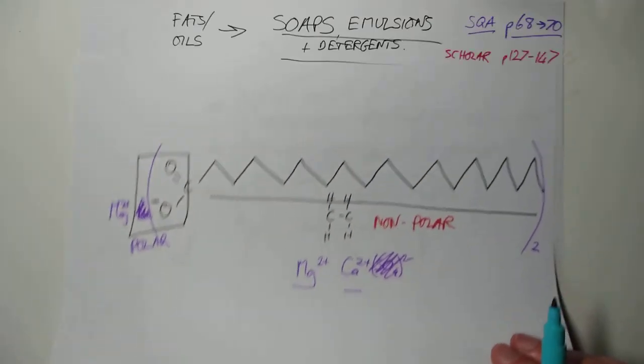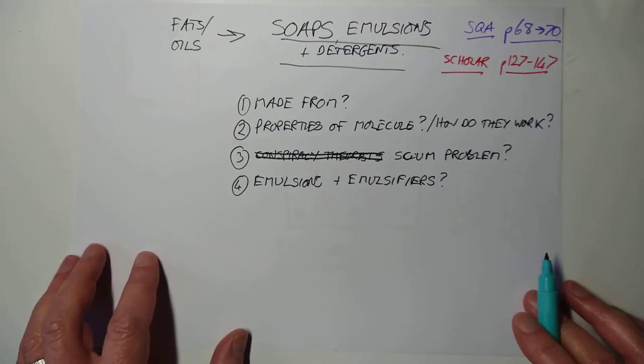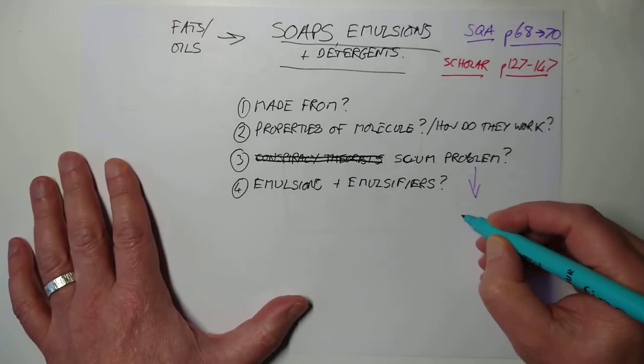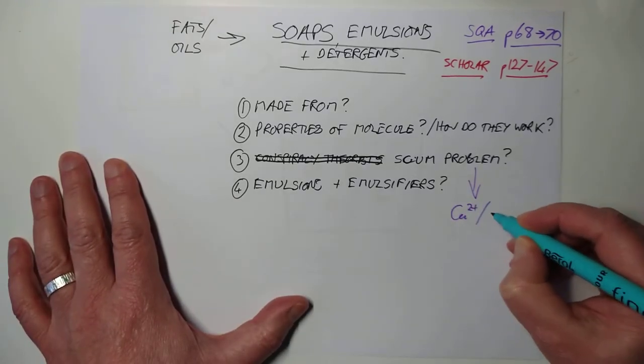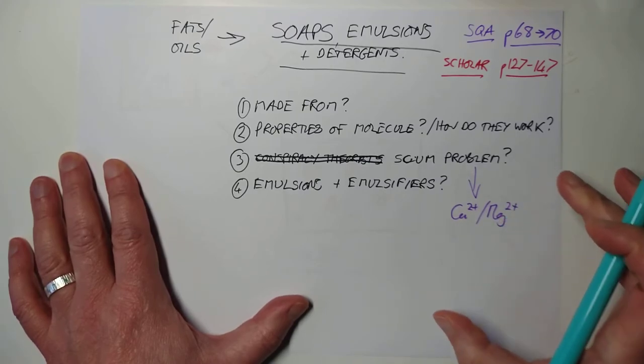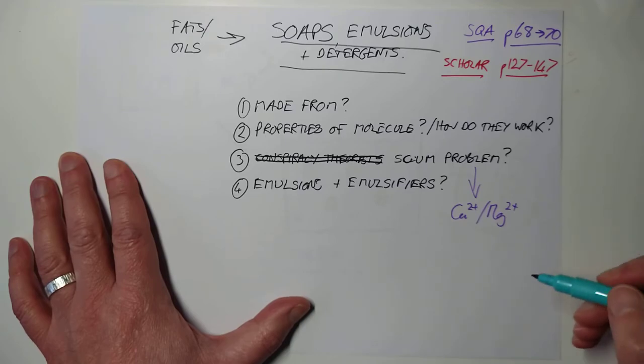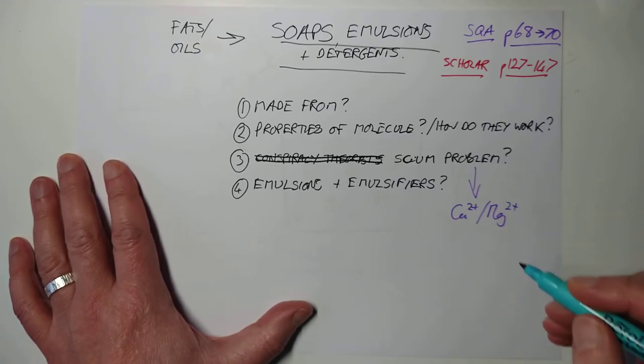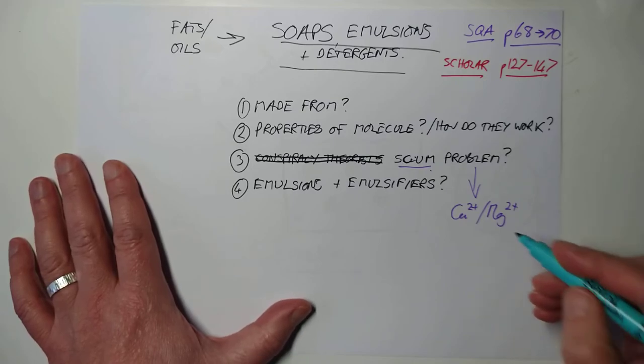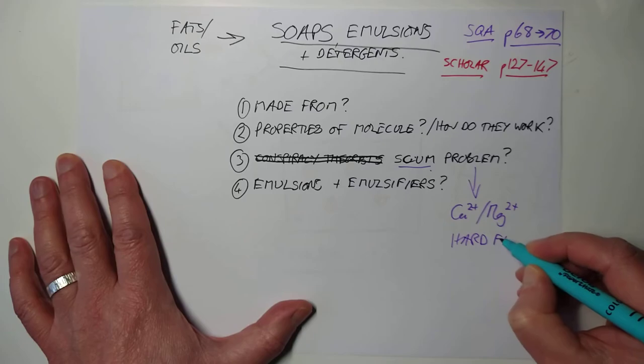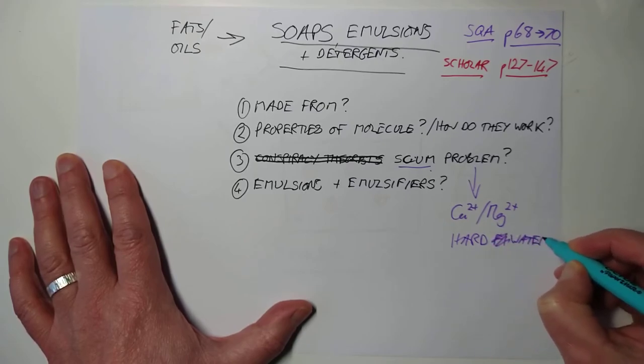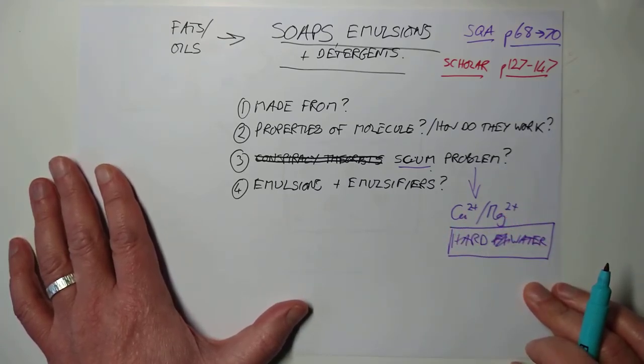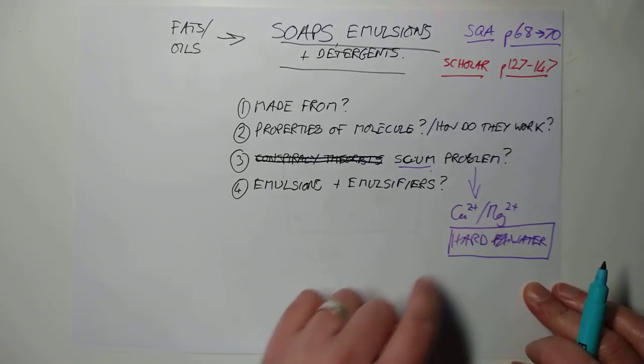And if you create this, this is now insoluble, which makes two things happen. Number one, your soap doesn't work very well because you can't dissolve it in the water. And number two, this forms scum, sort of grey, floaty stuff on the surface of the water. So, how do we get around that? Well, the answer is we invented something called soapless detergents. That's why we invented liquid soaps. They're technically speaking, more detergents. They all contain soapless detergents to avoid forming scum.